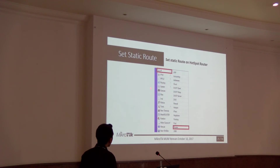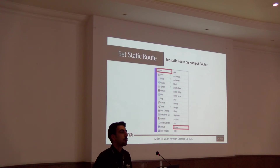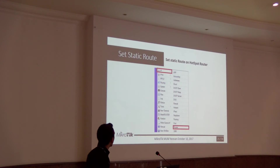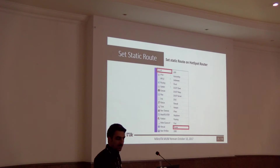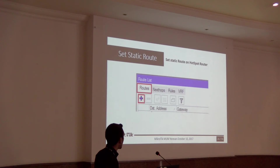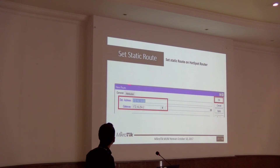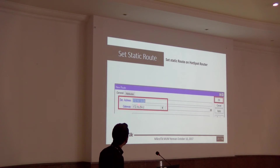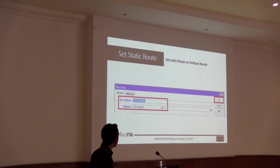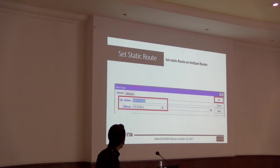We also need a static route, because the Hotspot router must be able to reach clients in the network. To add the route, go to the IP menu and click on Routes, then click Add. In the new route window, in the Destination Address field, enter the IP address range of your network. In the Gateway field, enter the core router's IP address for this route.